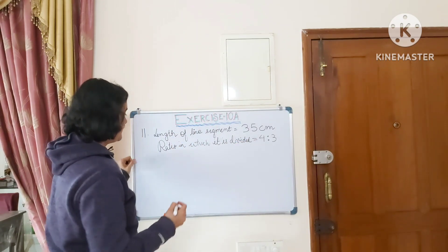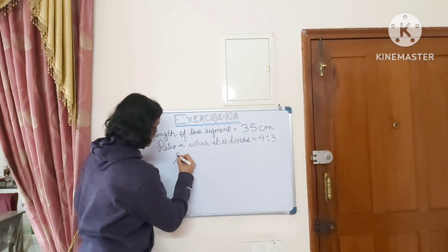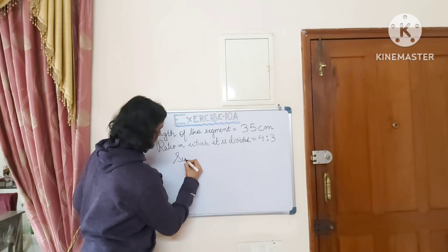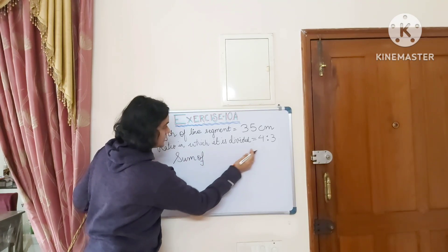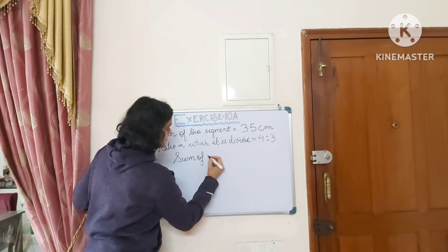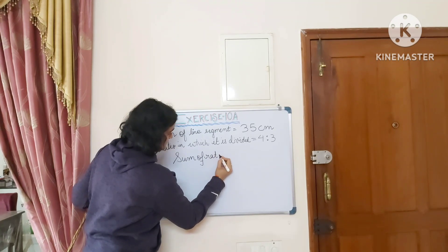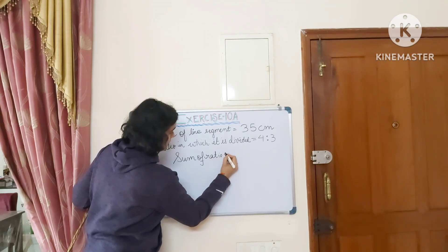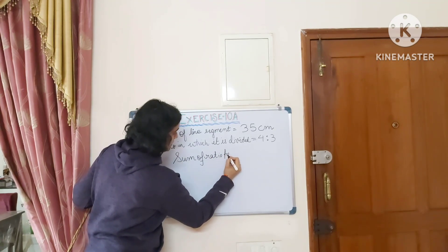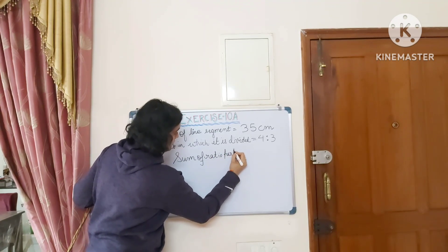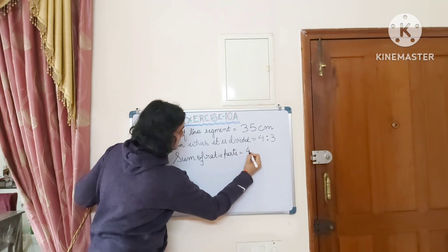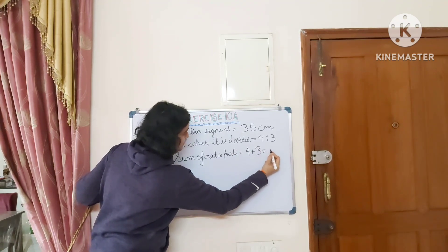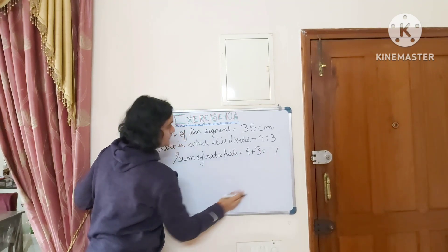First we need to find the sum of the ratio parts. The sum of the two ratio parts is 4 plus 3, which equals 7.